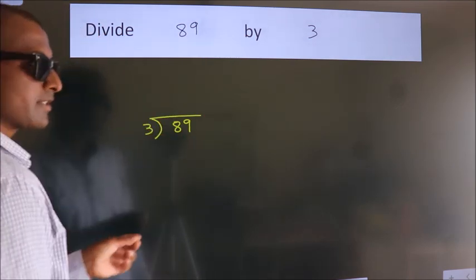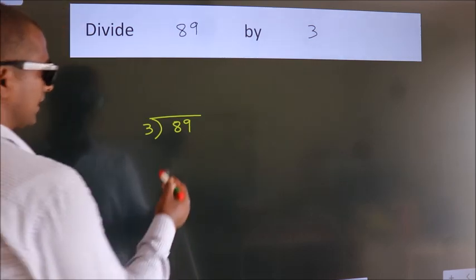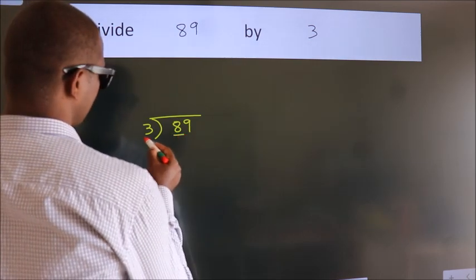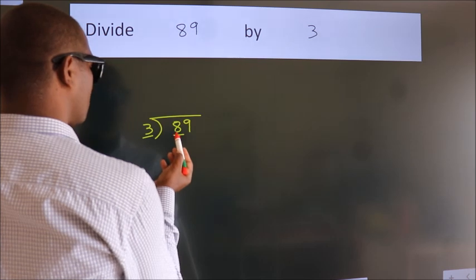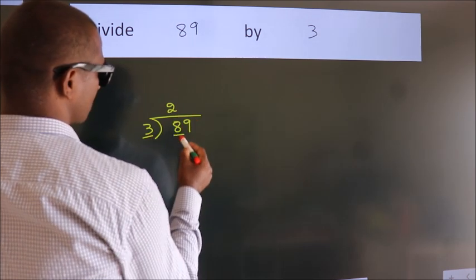This is your step 1. Next, here we have 8, here 3. A number close to 8 in the 3 table is 3 times 2, 6.